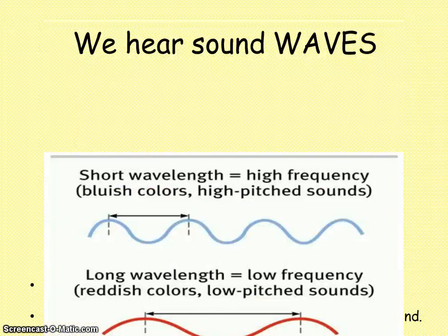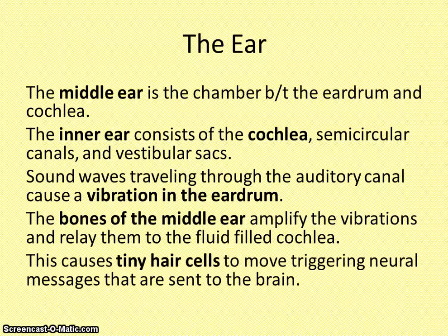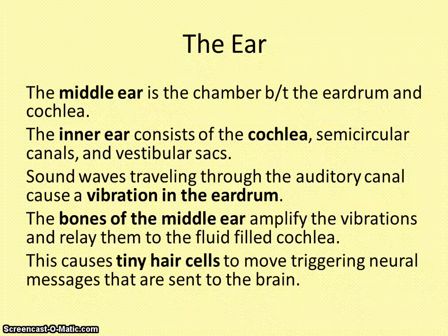So how does the ear work? There are different parts of the ear that you will need to know, just like with the eye. Basically, the ear converts sound waves into neural activity, just like we do with the eye. The visible part of the ear is called the pinna, and it channels sound waves through the ear canal, then to the eardrum, and the eardrum vibrates.